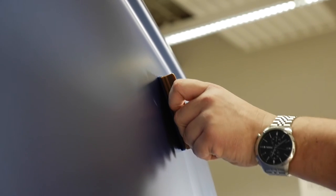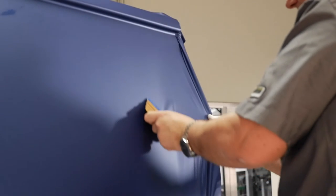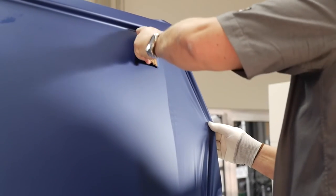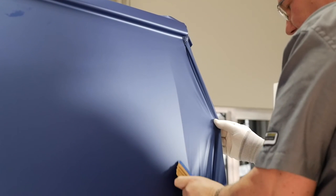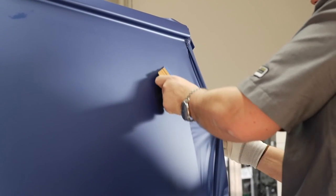Apply with long, overlapping strokes and ensure that the squeegee is in constant contact with the film. The 3M Control Tech technology feature ensures that the film is flexible on the surface and sticks only when pressure is applied. Whilst the 3M Comply Air Release feature allows the air to be easily removed without causing bubbles.